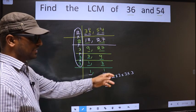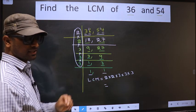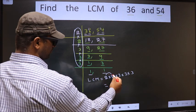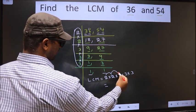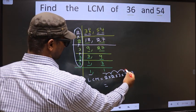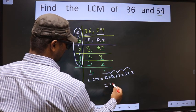Let us multiply these numbers. That is 2 into 2, 4, into 3, 12, into 3, 36, into 3, 108.